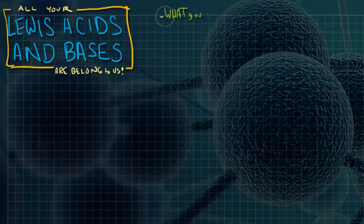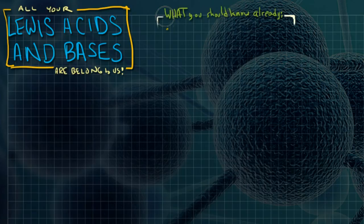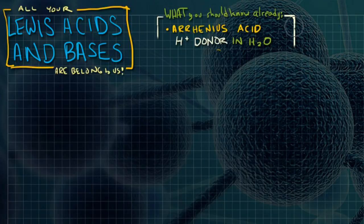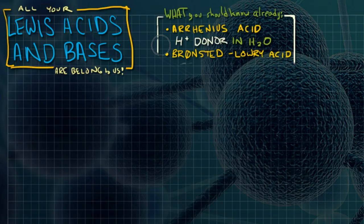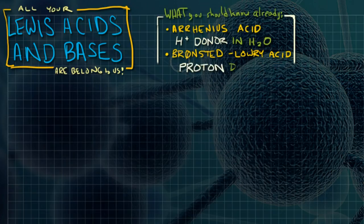To understand this piece, what you should probably already know would be what's an Arrhenius acid. An Arrhenius acid is just a proton donor in a solution, in an aqueous solution. There are also Bronsted-Lowry acids. This is the one that killed me on the test because I didn't read it. I thought L for Lewis and went from there. Anyway, a Bronsted-Lowry acid is a little bit broader definition than a Lewis acid. It's a proton donor, so it doesn't have to be in an aqueous solution.